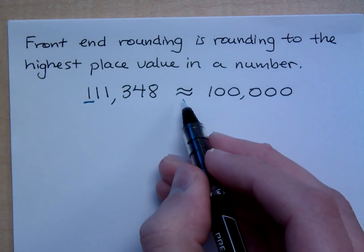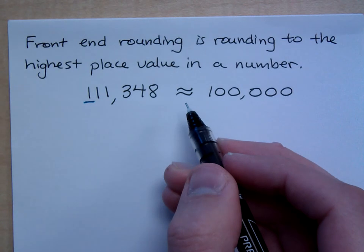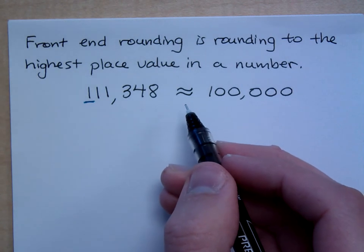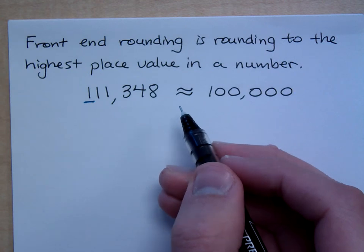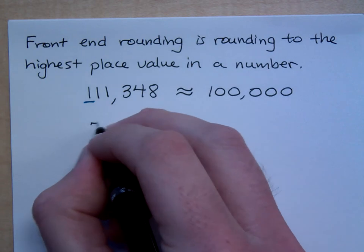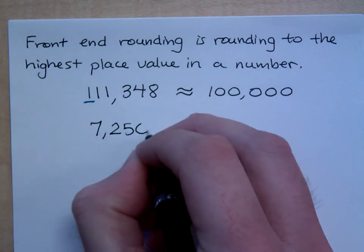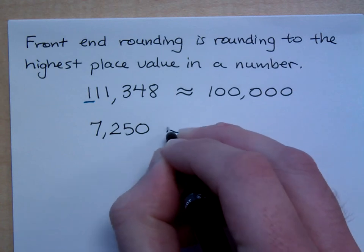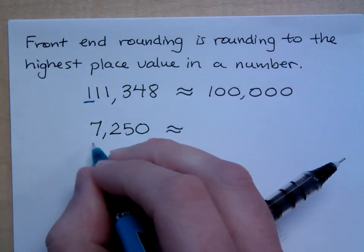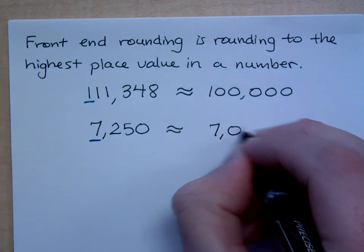If you see this symbol right here, we'll say approximately equal to. Use that if you're talking about rounding or you're trying to approximate something. And so that's what they're doing. You could take a number like 7,250. And so if you use front-end rounding, if you round to the nearest, in this case, the nearest 1,000, what would that be? 7,000. That would be 7,000.